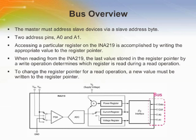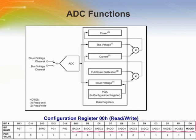Once all data have been transferred, the master generates a stop condition, indicated by pulling SDA from low to high while SCL is high. The internal ADC is based on a delta-sigma front end with a 500 kHz, plus or minus 30%, typical sampling rate.